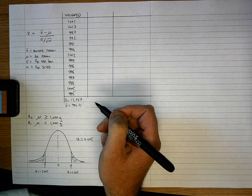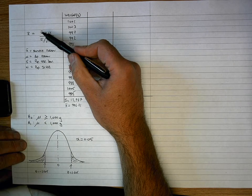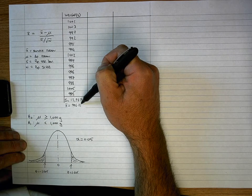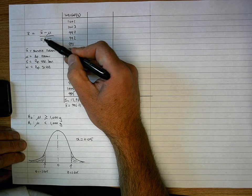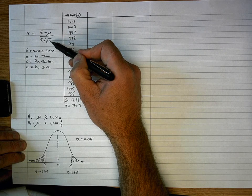So now, I've got three out of my four components in my formula. I've got X-bar, 996.21, minus mu, which is 1,000, divided by the standard deviation over the square root of 14.